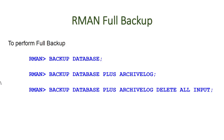To take a full backup you run the command 'backup database'. If you want to take the archive log along with the backup you can run 'backup database plus archive log', and if you want to delete the previous archive logs when you take the archive log backup, you can say 'backup database plus archive log delete all input'.